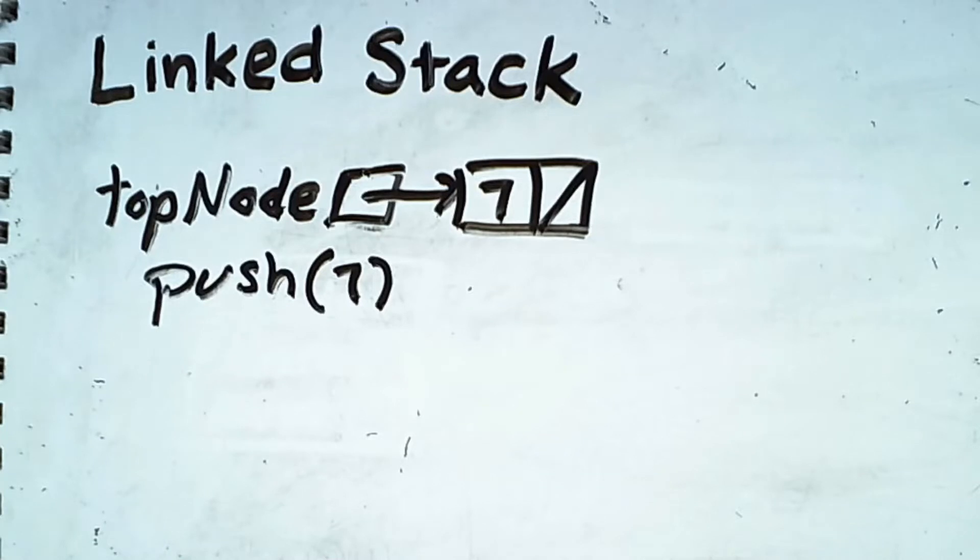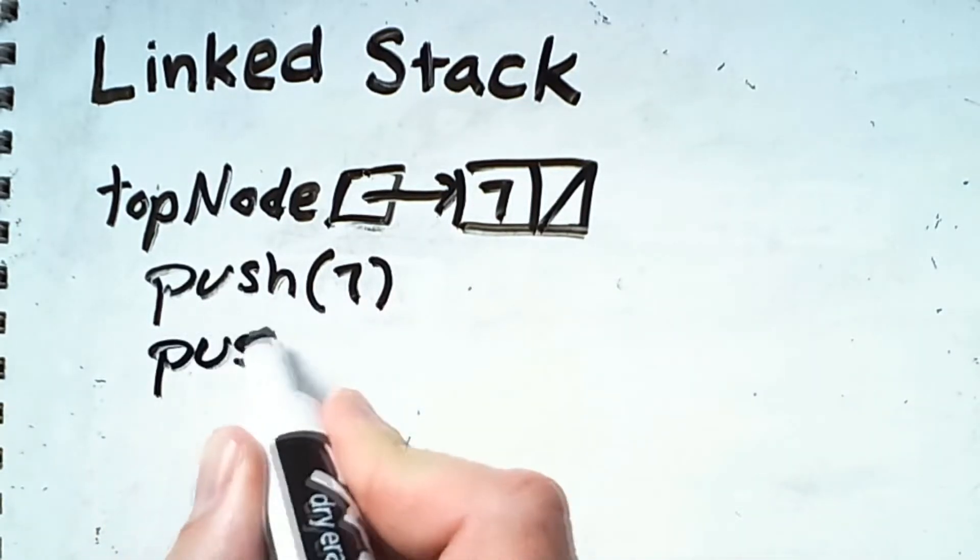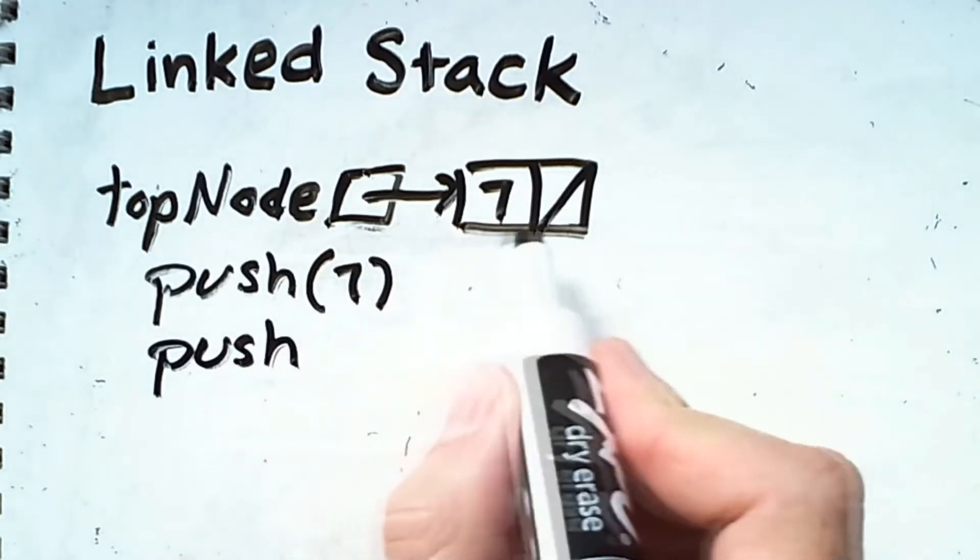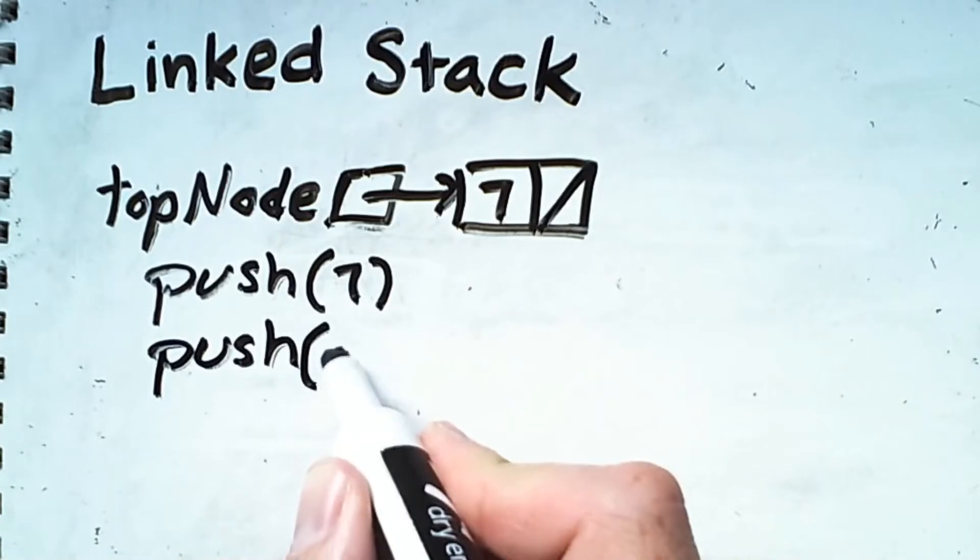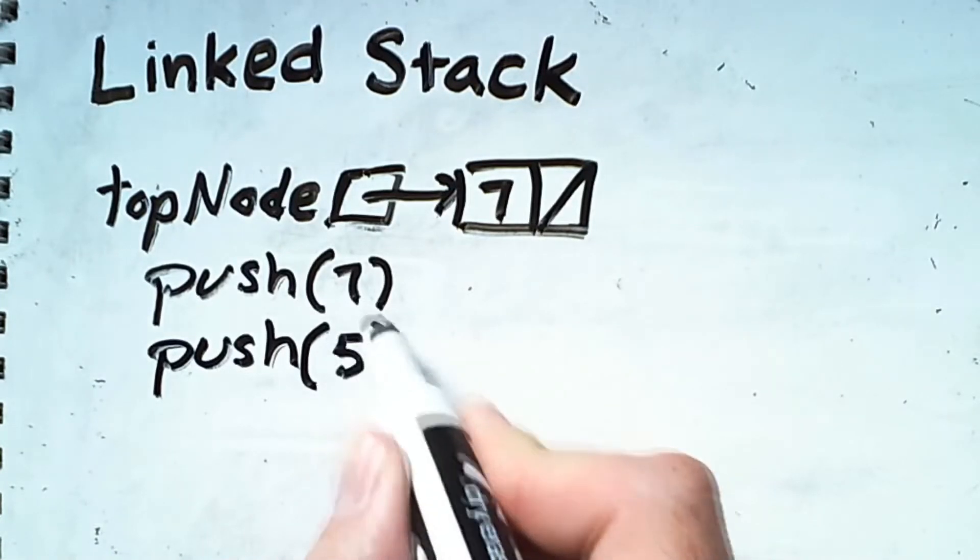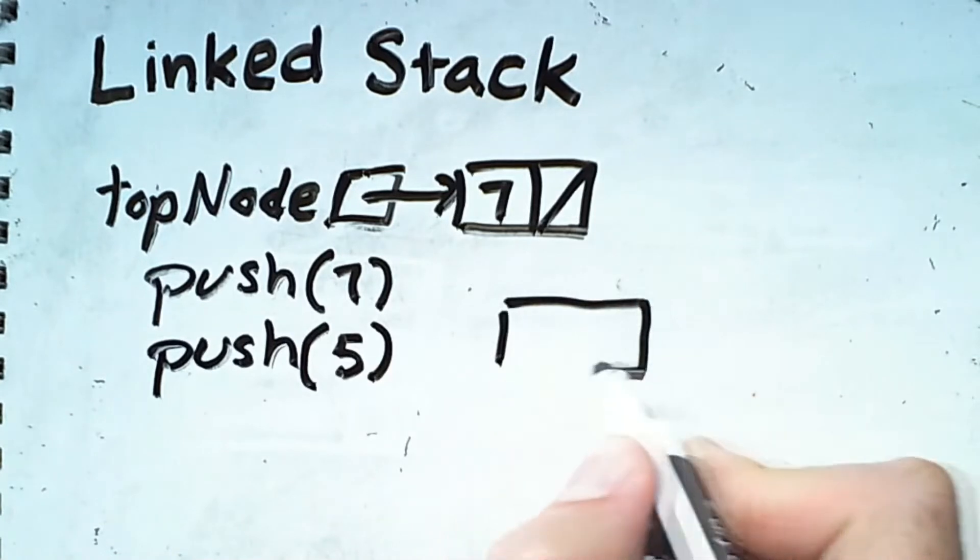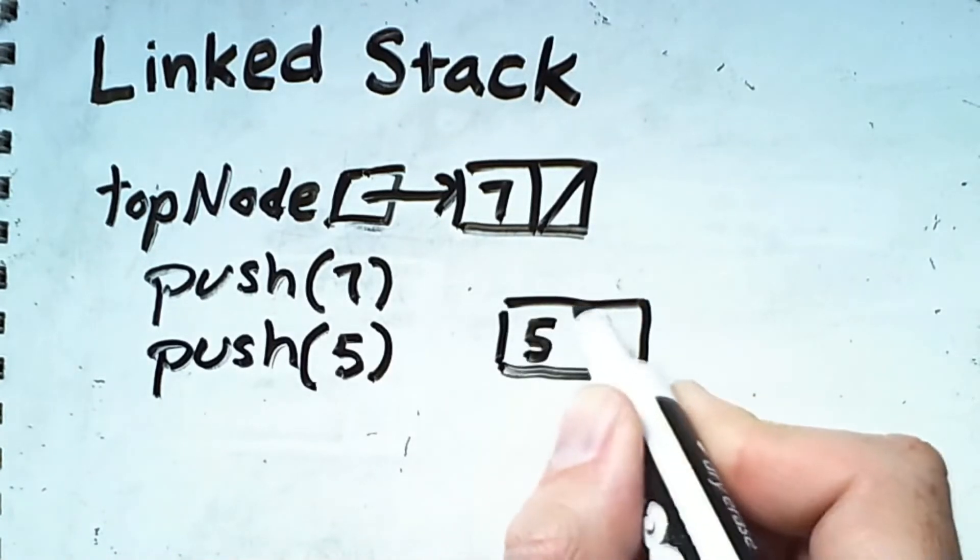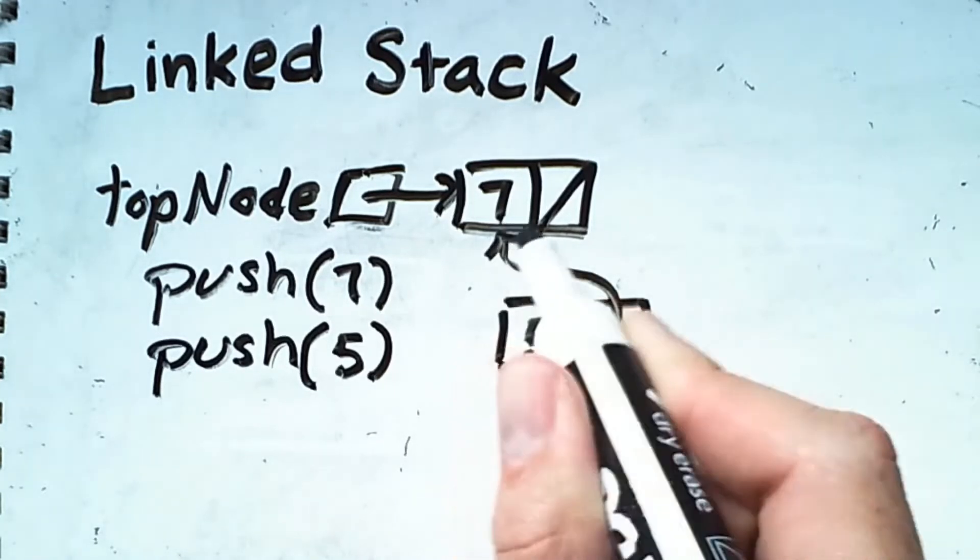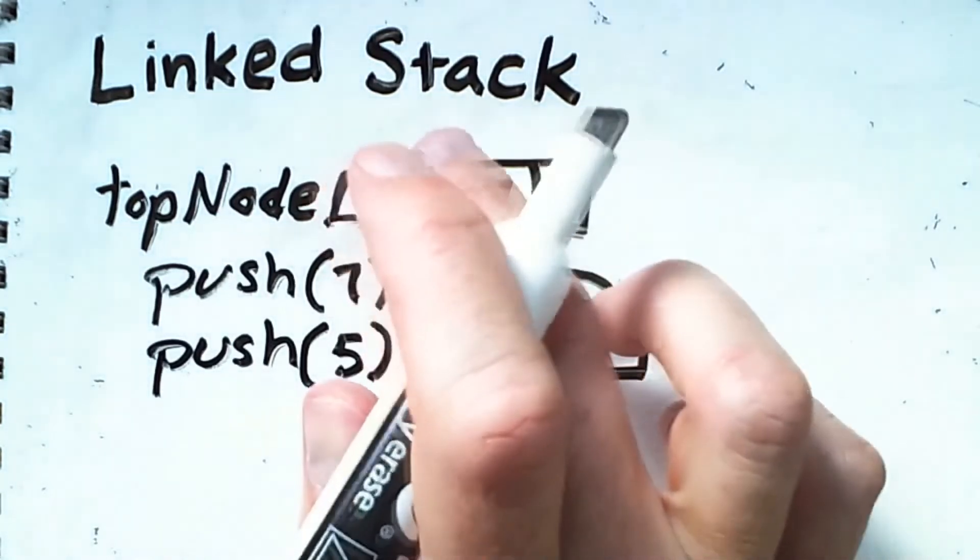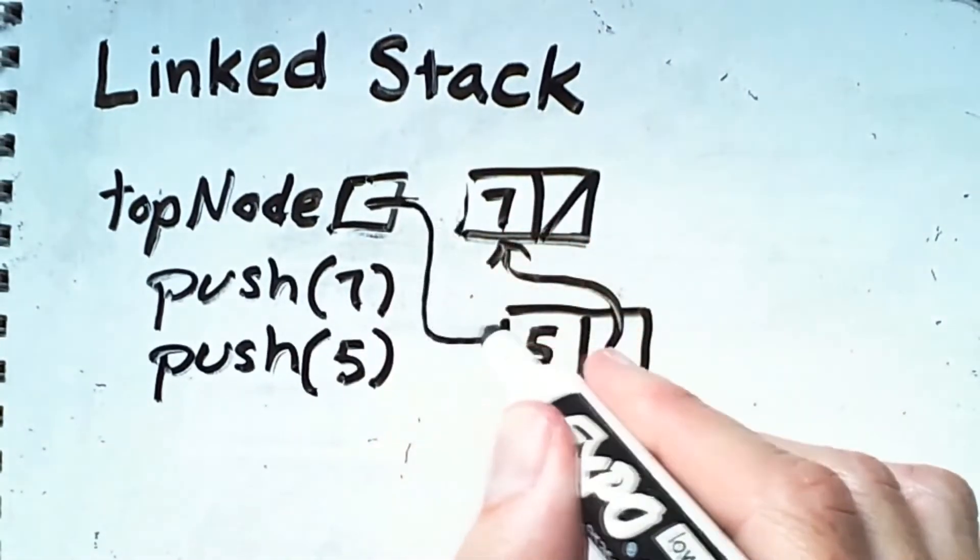However, in general, when we push something on, what we're actually doing is inserting it between the previous links and this top node reference. So if I push a value of 5 onto the stack, I'm creating a new node that contains a 5 and I'm making the next link of that new node be whatever the current top is. I then reassign the top to be the new node.